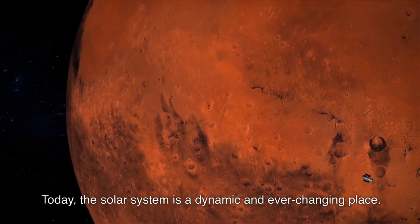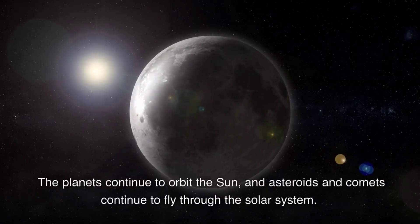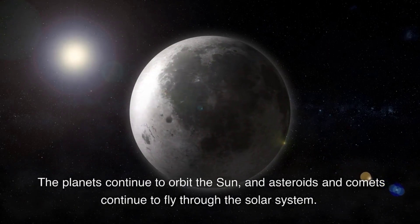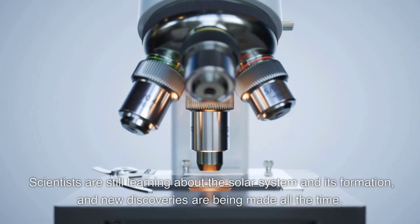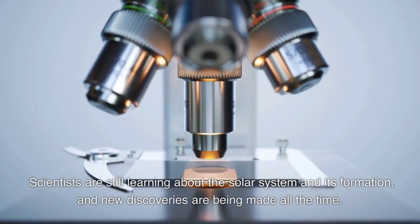Today, the solar system is a dynamic and ever-changing place. The planets continue to orbit the sun, and asteroids and comets continue to fly through the solar system. Scientists are still learning about the solar system and its formation, and new discoveries are being made all the time.